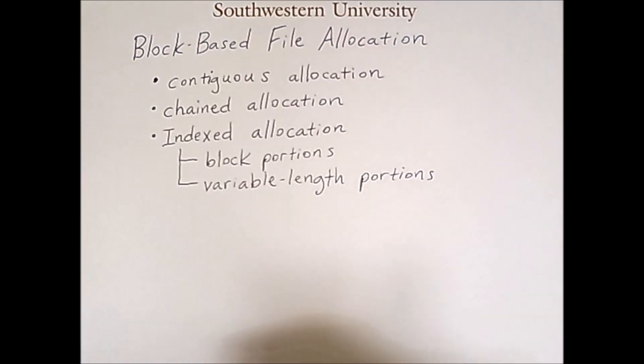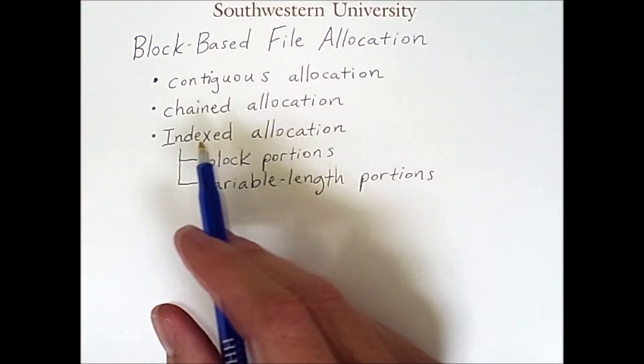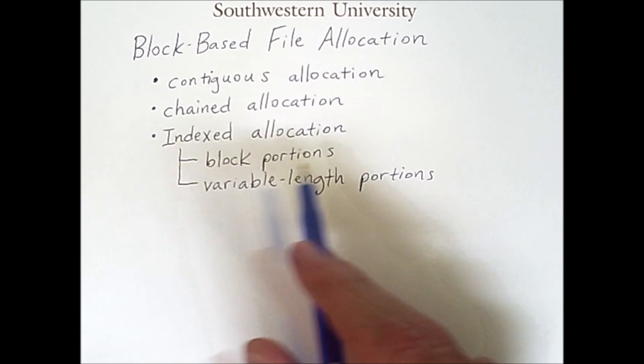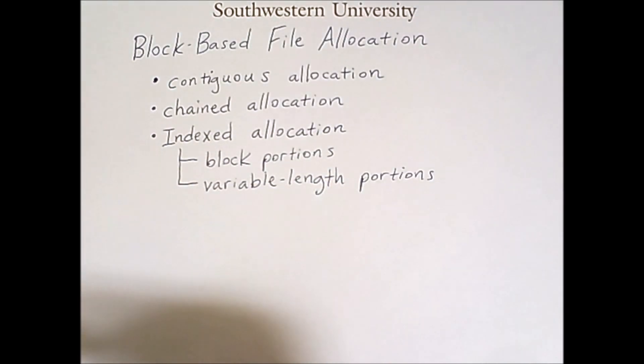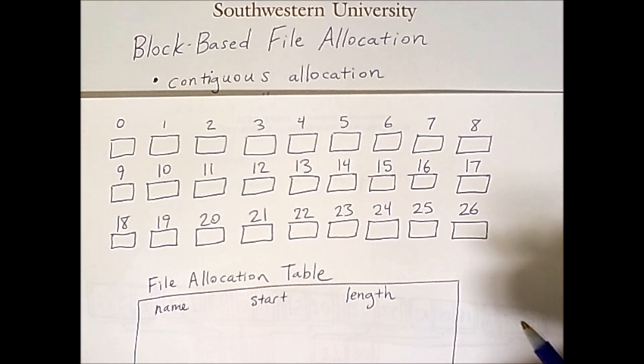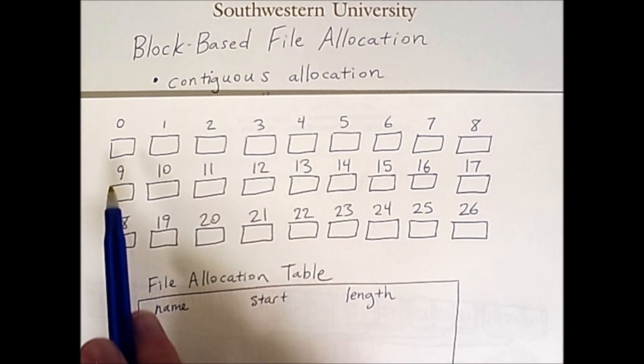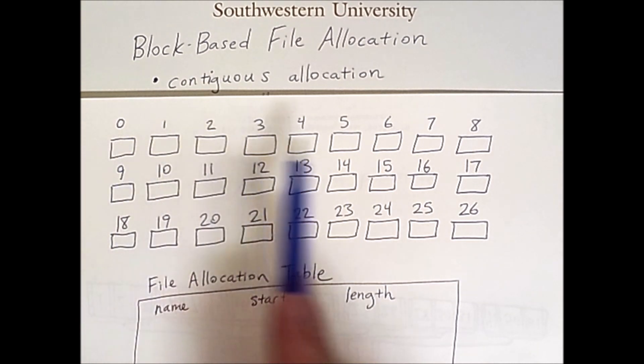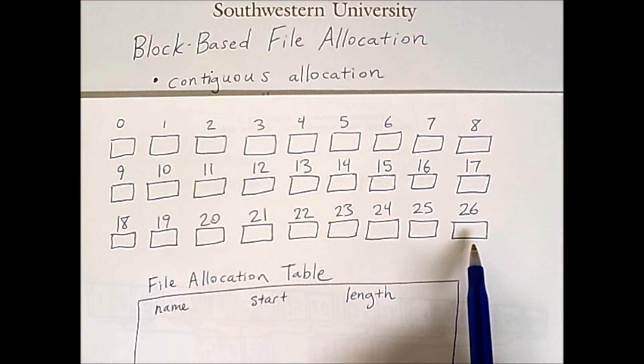Here's a list. The forms of file allocation I'll be discussing are contiguous allocation, chained allocation, and two forms of indexed allocation. Here is a visual example of what contiguous allocation looks like. Here is an abstract representation of a disk. The blocks are labeled from 0 up to 26 in a single linear logical array. The fact that they're organized in two dimensions is irrelevant.